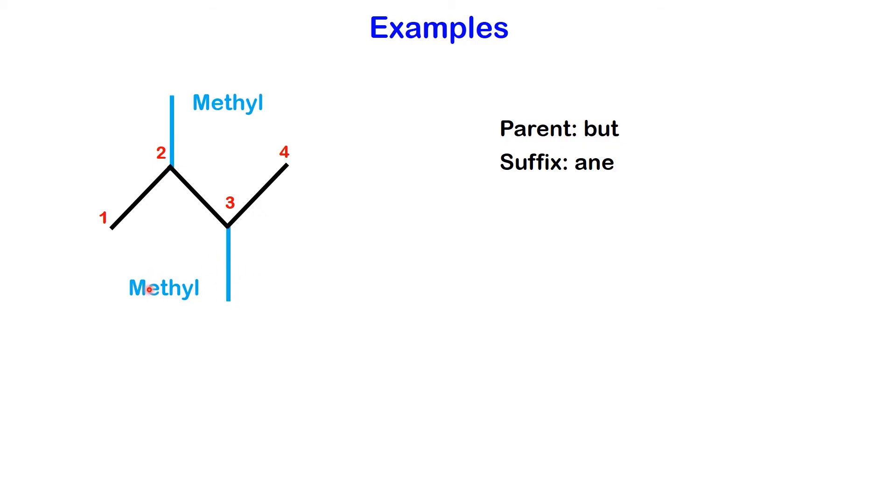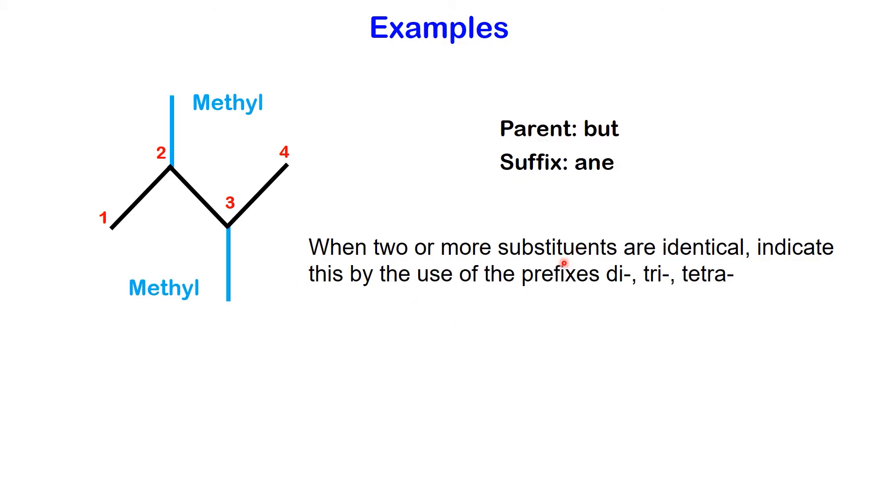Finally, assemble the name. When two or more substituents are identical, indicate this using the prefixes di, tri, tetra, and so on. Ensure that each substituent has a corresponding number and use commas to separate numbers from each other. The name for this molecule is 2,3-dimethyl butane.